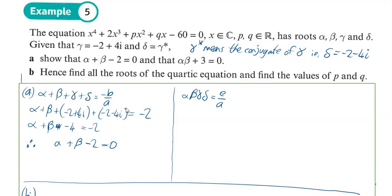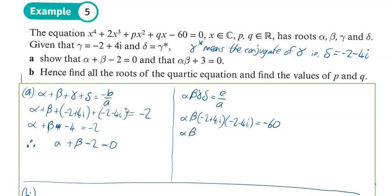We're going to use the product to sort out the next part. If we put in the products: alpha beta we don't know — that's what we're trying to find. Gamma was minus 2 plus 4i, delta was minus 2 minus 4i, and e over a is minus 60 over 1, which is just minus 60.